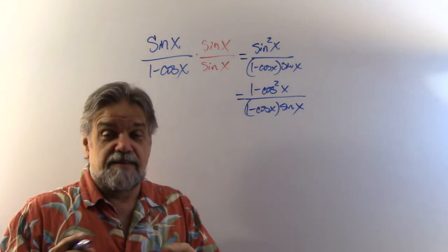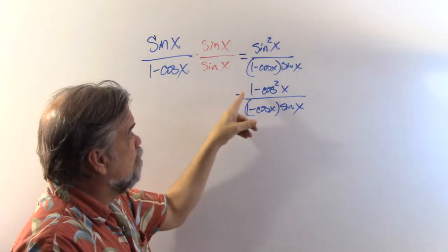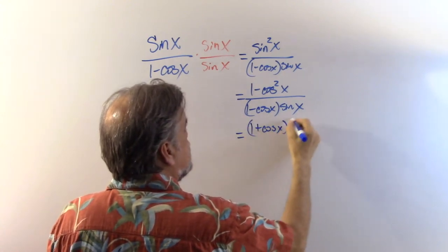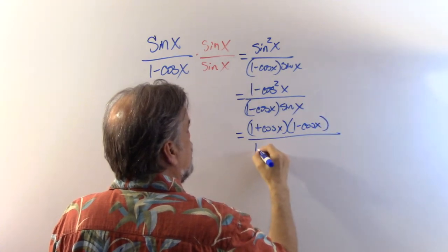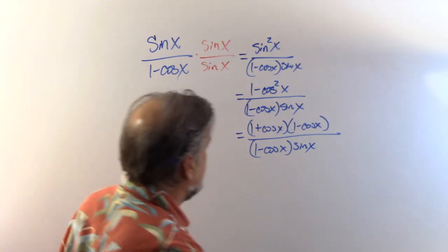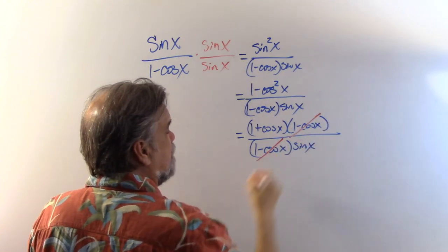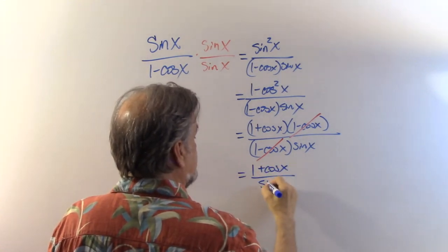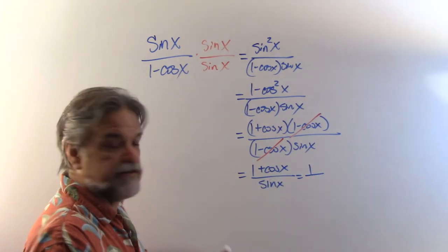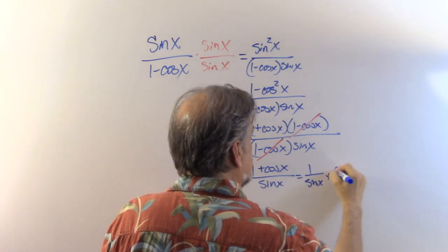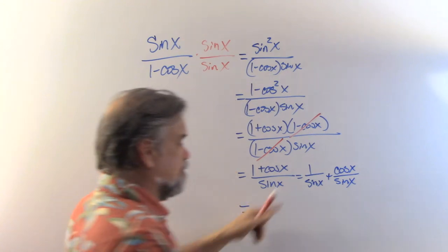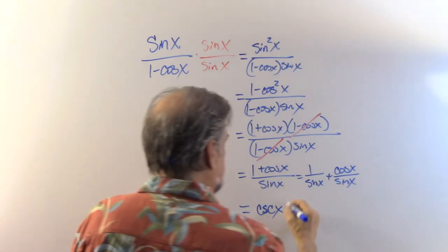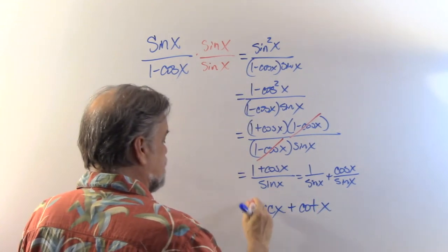One minus cosine squared factors as one plus cosine of x times one minus cosine of x, over one minus cosine of x times sine of x. The one minus cosine of x over one minus cosine of x cancels to one, leaving one plus cosine of x over sine of x. Splitting into two fractions: one over sine of x plus cosine of x over sine of x, which is cosecant of x plus cotangent of x. That is about as far as we're going to get.